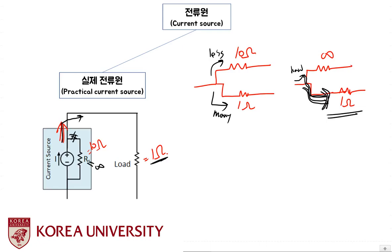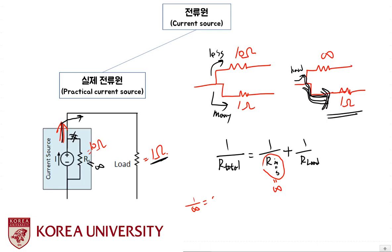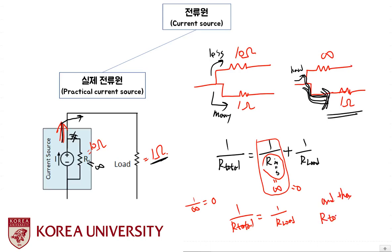Second, we can prove it using the current division rule and math. Using the current division rule: 1 over R_total equals 1 over R_internal plus 1 over R_load. If we make R_internal equal to infinity, then 1 over infinity equals zero, so the formula simplifies to: 1 over R_total equals 1 over R_load, meaning R_total equals R_load. This means all current flows into the load resistor. Therefore, the internal resistance of an ideal current source is equal to infinity.